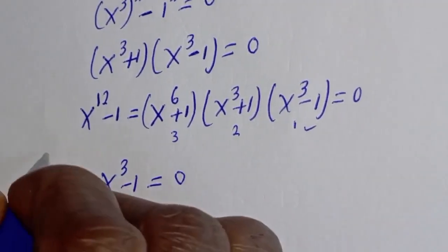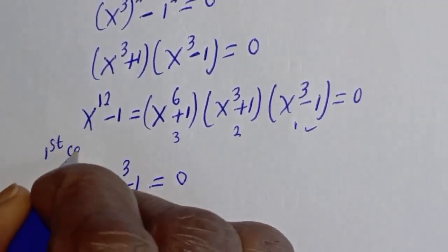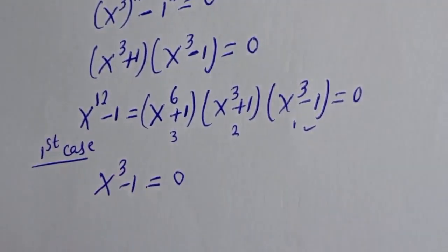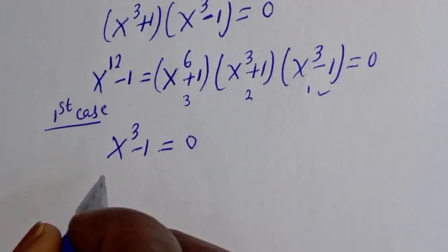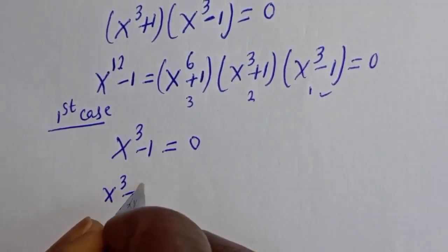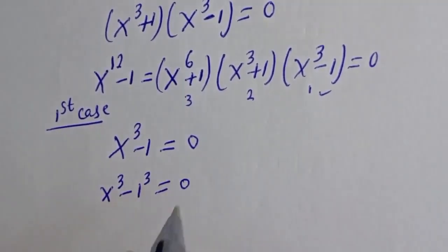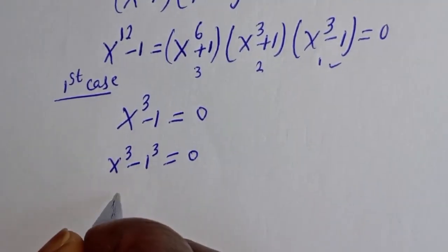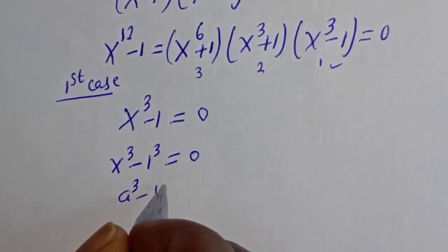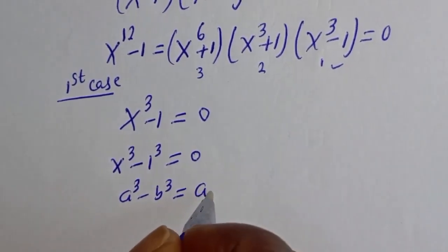Let's call this the first case. s raised to power 3 minus 1 raised to power 3 is equal to 0. This is the same thing as s raised to power 3 minus 1 cubed is equal to 0.